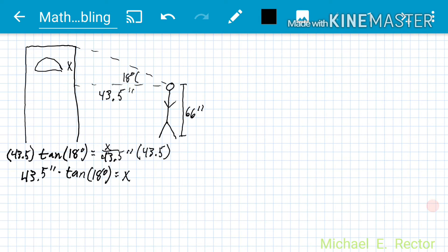When you enter this in your calculator you want to make sure that your calculator is in degree mode, not radians. When you enter that in you will get 14.134 inches equals X.